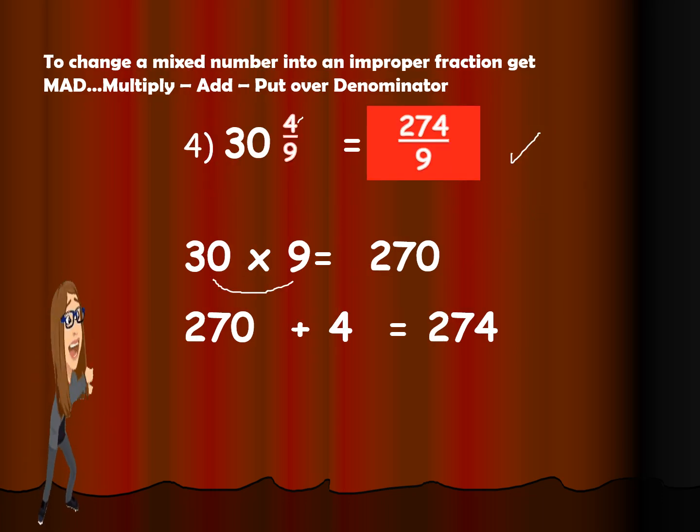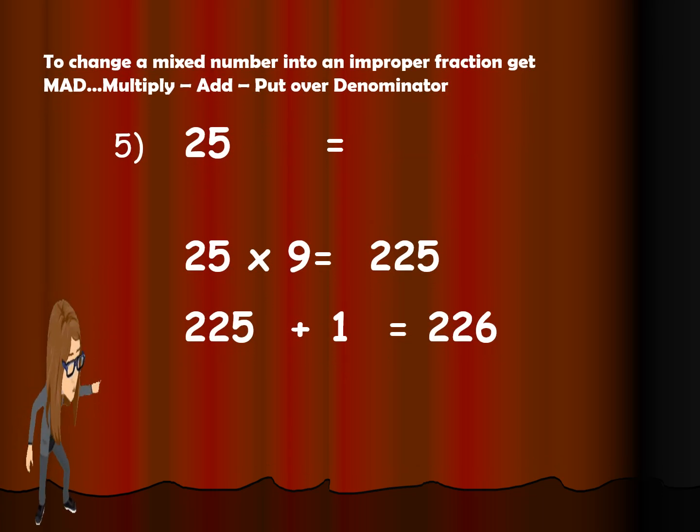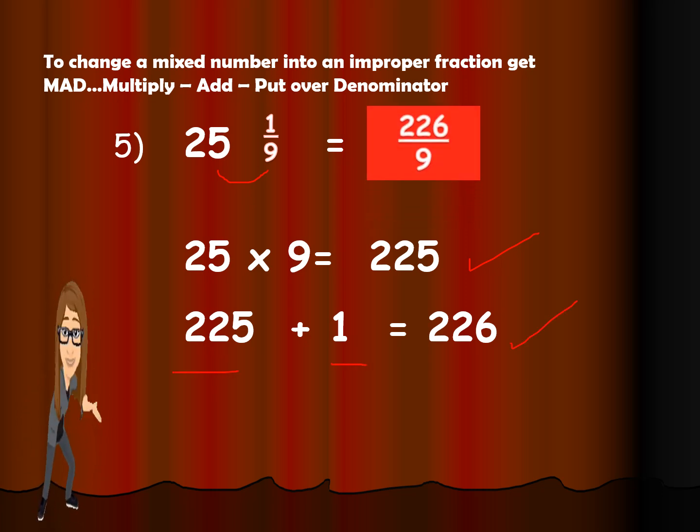Now, let us go on the last number. We have 25 and 1/9. So 25 times 9 is 225. Then 225 plus 1 is 226. So the answer is 226 over 9. Very good.